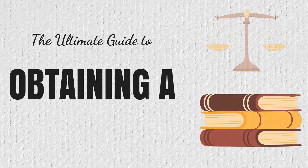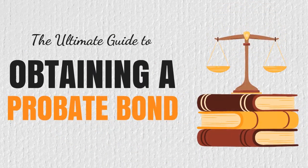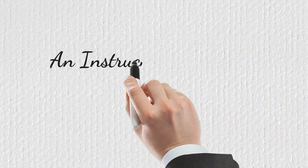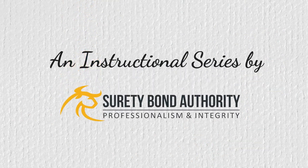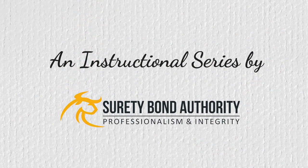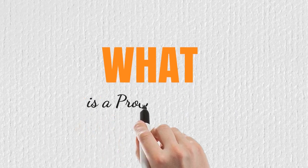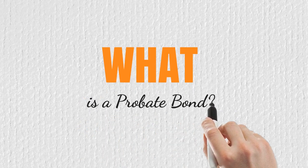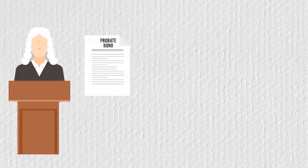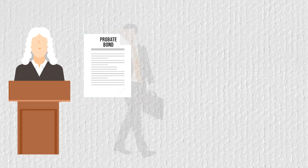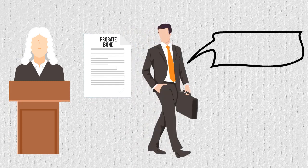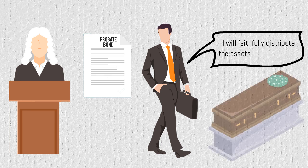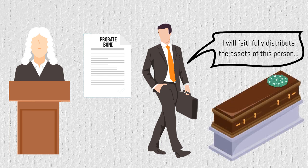The Ultimate Guide to Obtaining a Probate Bond. What is a probate bond? A probate bond is often required of a court-appointed fiduciary to ensure that the fiduciary will faithfully distribute the assets of a deceased person per state law and the terms of the trust or will.